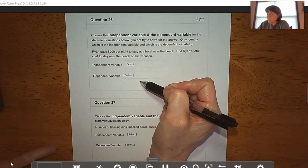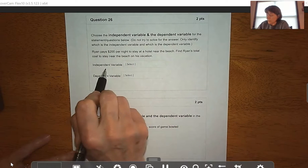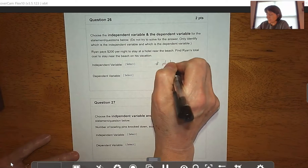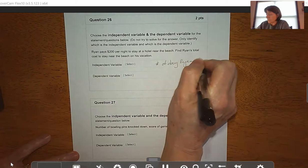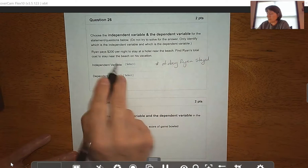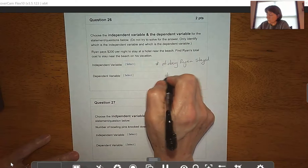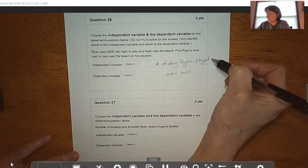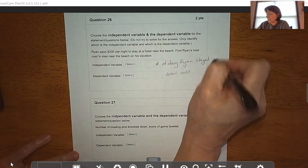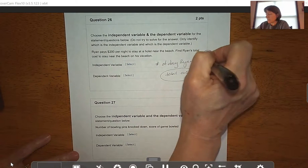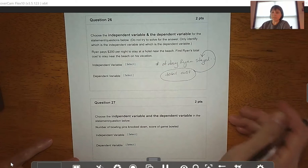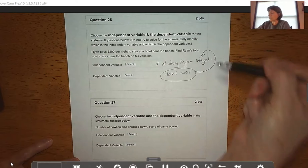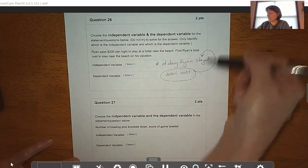You should have chosen for your independent variable the number of days Ryan stayed. The number of days he stays at this hotel is going to determine his total cost. So his total cost is the dependent variable, and the number of days he stays is the independent variable. Ryan gets to choose the number of days he wants to stay, and then the total cost depends on how many days he stays.